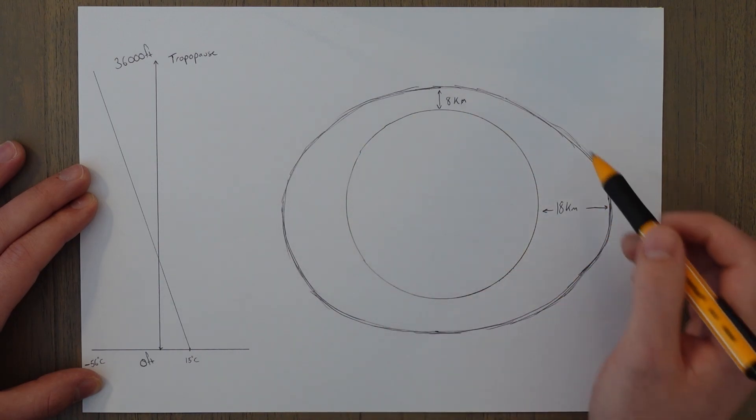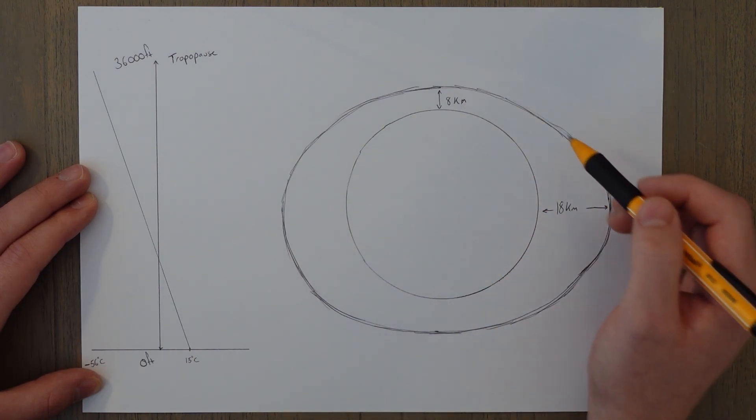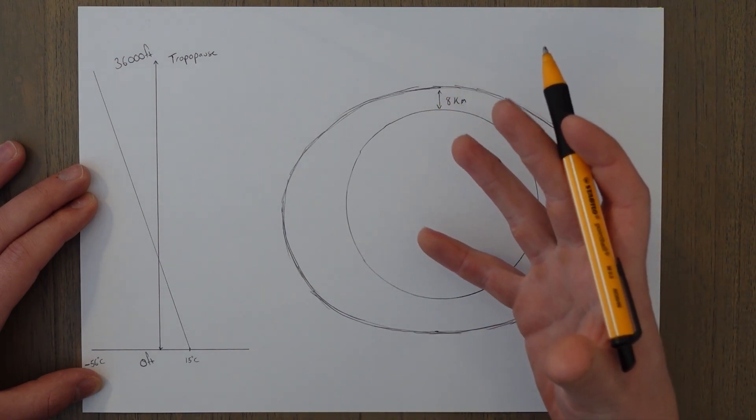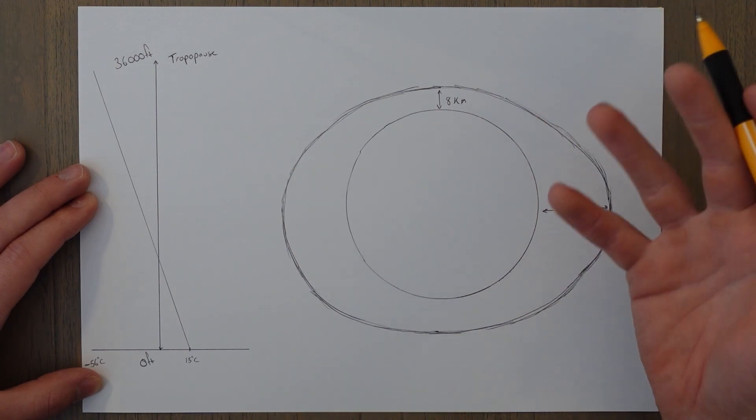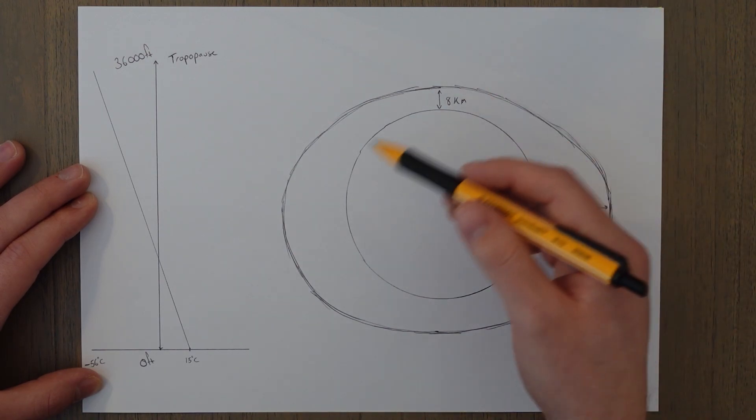We spend almost all of our lives in the troposphere so it's where most of the weather occurs as well. It's where most of the water vapor is, so it's the most important for us in terms of meteorology.